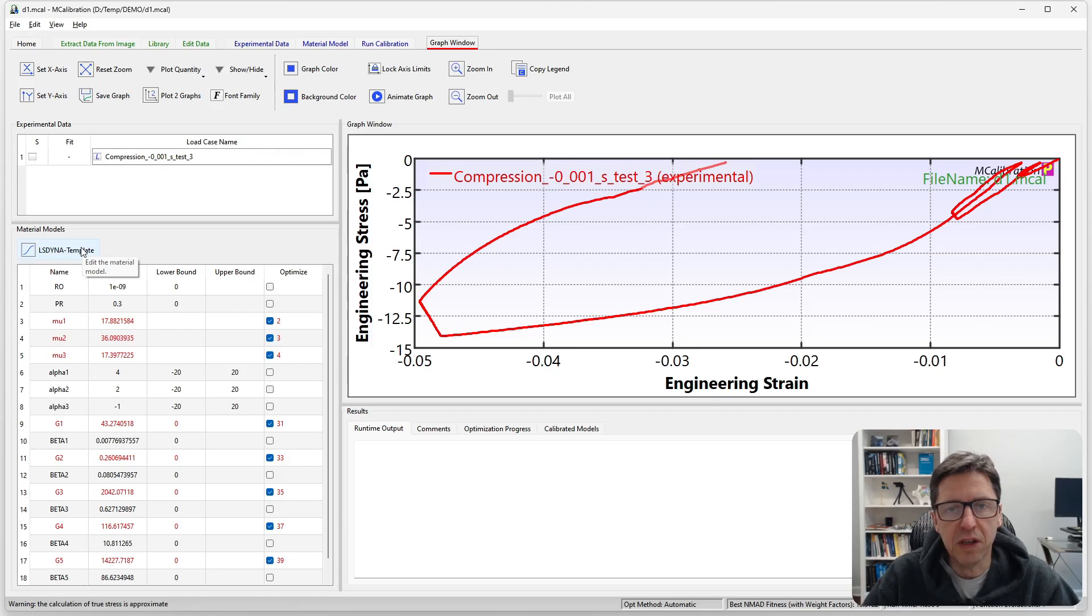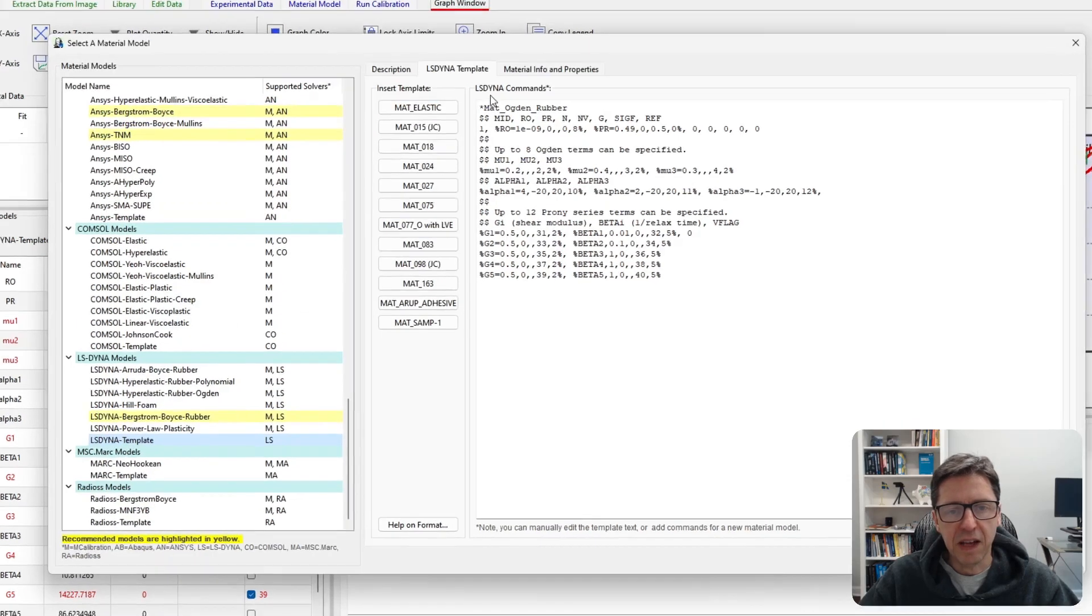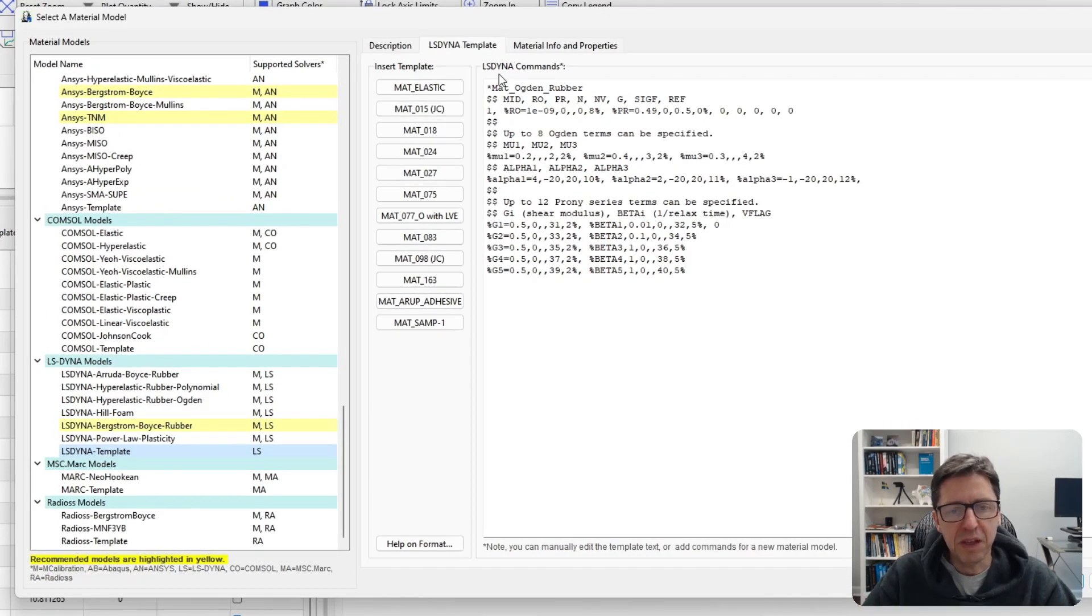Then I've specified this Ogden hyperelastic model with viscoelasticity. That's a model that I implemented here as an LS Dyna template material model in mCalibration.